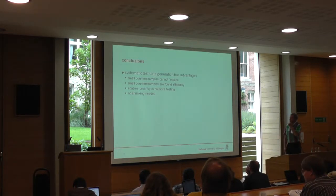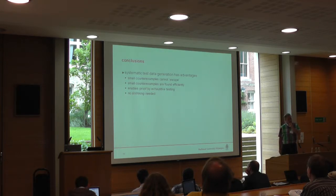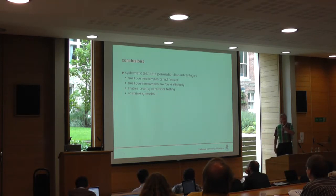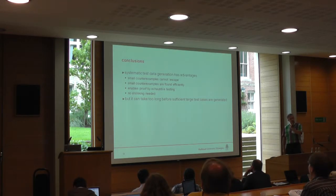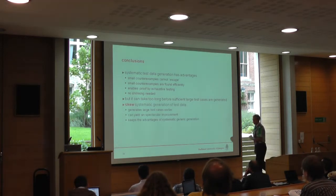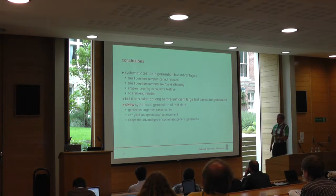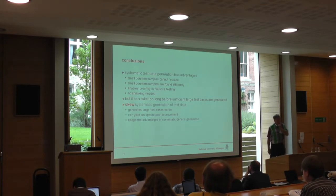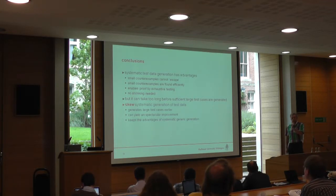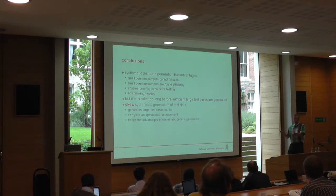My conclusion: systematic test data generation has advantages over pseudo-random testing. It can prove things. Small counter-examples don't escape and are found very efficiently. You can do exhaustive testing and all kinds of nice things. But the problem was it can take too long before a sufficiently large list is generated. The skewed generation fixes that — I generate long lists earlier, and in most examples it's better.